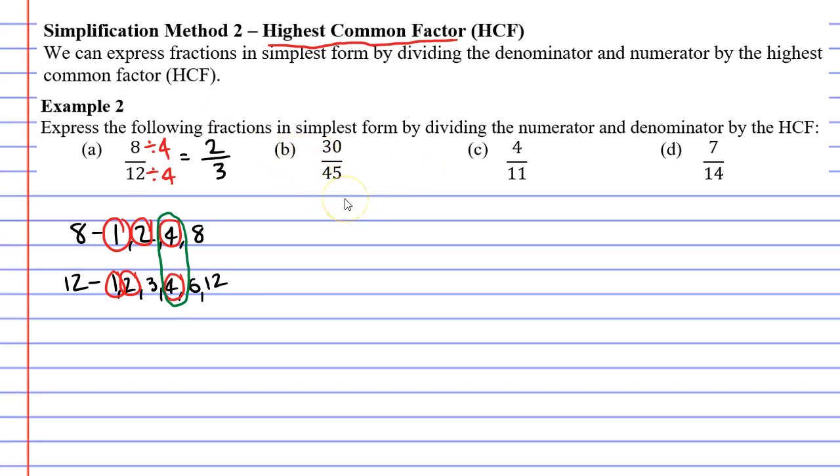We're going to find the factors of 30, we'll write it all the way down here, and also 45. I reckon they're going to have quite a lot of factors. So what numbers multiply to make 30? Well I know that 1 times 30 makes 30. I know that 2 times 15 makes 30. I also know that 3 times 10 makes 30. And finally, 5 times 6 makes 30.